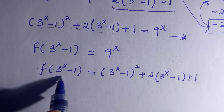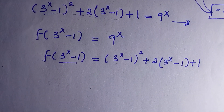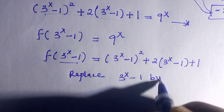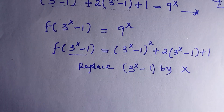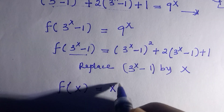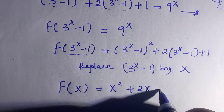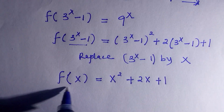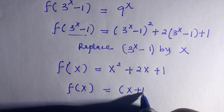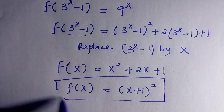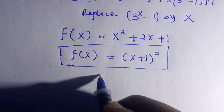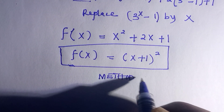What is inside the function correlates with the right-hand side. We replace 3 to the power of x minus 1 by x. Since we are asked to find f of x, by substituting we get: f of x equals x squared plus 2x plus 1. This can also be written as f of x equals x plus 1, all to the power of 2. Expanding that gives what we have above. That is the first method.